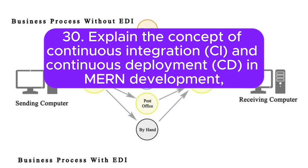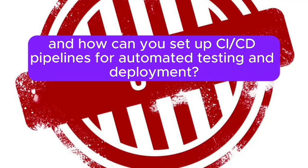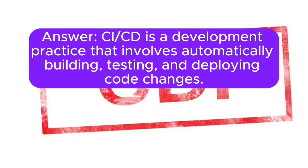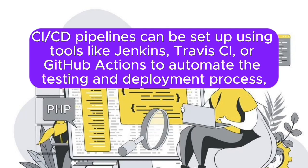30. Explain the concept of continuous integration (CI) and continuous deployment (CD) in MERN development, and how can you set up CI/CD pipelines for automated testing and deployment? Answer: CI/CD is a development practice that involves automatically building, testing, and deploying code changes. CI/CD pipelines can be set up using tools like Jenkins, Travis CI, or GitHub Actions to automate the testing and deployment process.